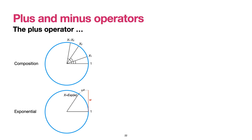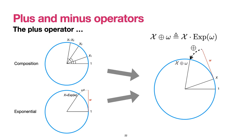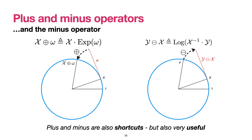These mappings allow us to introduce a shortcut operator called plus, which combines composition in the group with the exponential. It takes an element X of the group and adds on top of it another element omega from the tangent space: X-plus-omega is the result of composing X with Exp(omega). So you have an element X of the group, an element omega of the tangent space at X, and X-plus-omega gives the new group element. This is called the plus operator.